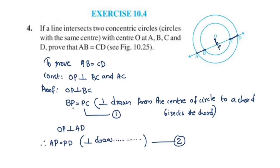So we have BP equal to PC and AP equal to PD. Now, what does AB mean? AB is part of the LHS that we need to find.